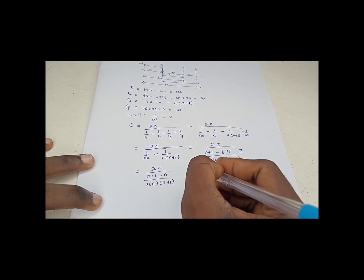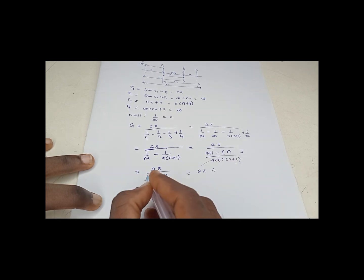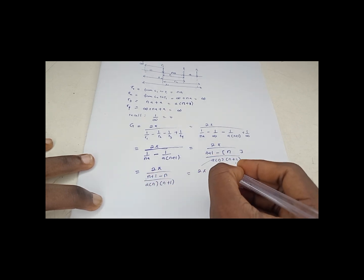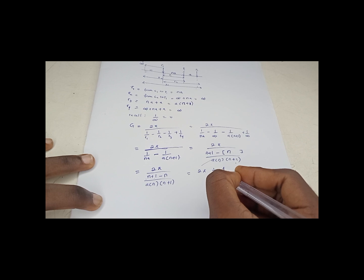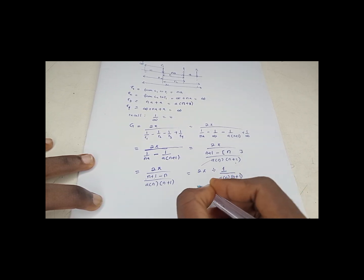Which means you are saying 2π divided by N minus N is 0, so 0 plus 1. N minus N is 0, 0 plus 1 is 1. 1 over A times N times (N plus 1).